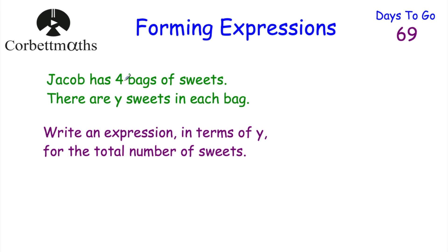Jacob's got four bags of sweets and each one contains Y sweets. So if each one contained 10 sweets we'd do 4 times 10; if each bag had 100 sweets we'd do 4 times 100. We don't know how many sweets are in each bag - we just know there are Y sweets in each bag. So we're going to do 4 multiplied by Y. In algebra we don't write the multiplication sign, so we just write 4Y. That's our expression in terms of Y.